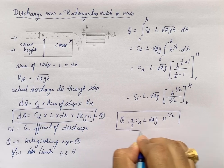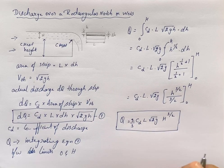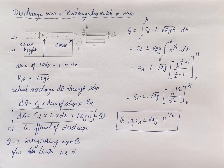This is the formula to find the discharge over a rectangular notch or weir. Thank you.